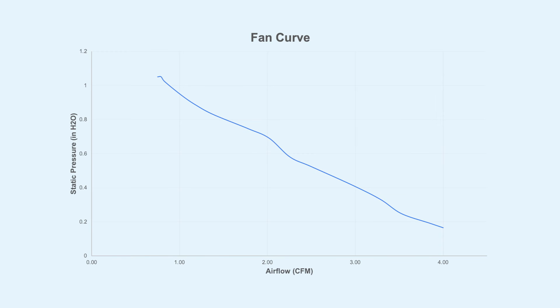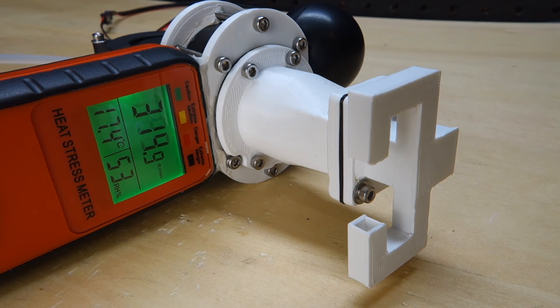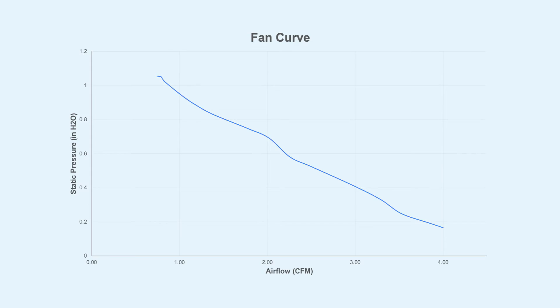So let's say you need 3 CFM of air. And you take and you measure the pressure drop in your part cooling duct at 3 CFM. And it comes out to be 0.3 inches of water. Well that's below the curve. So you're good to go. The fan will blow 3 CFM or more.